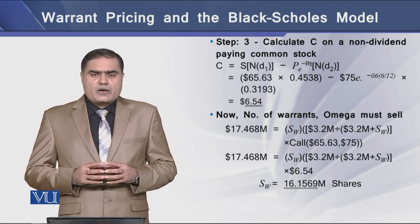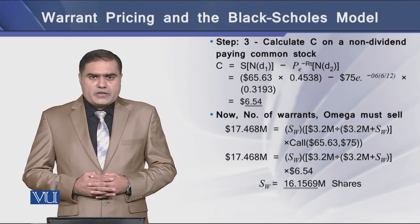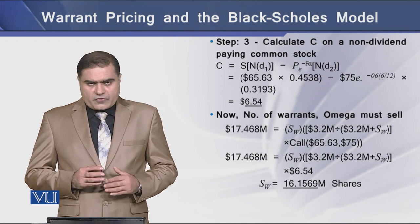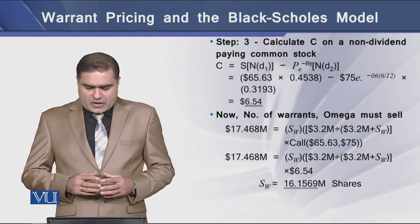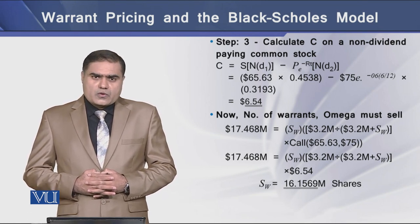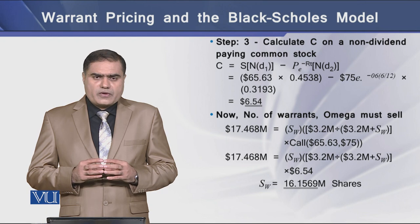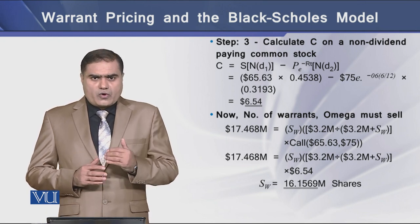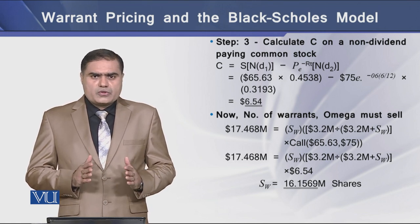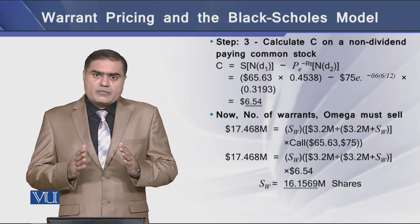This $6.54 is the per share value of the warrant. Substituting this call value of $6.54 into the warrant equation gives a resulting figure of $16.569 million. Using the BS model, we have determined the number of shares the firm must sell through warrants in order to raise approximately $17.468 million to pay off the existing debt of $18 million.